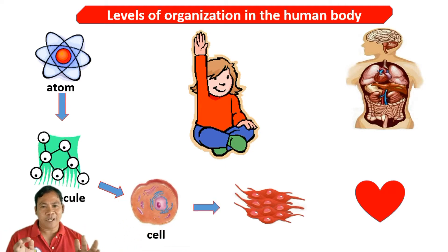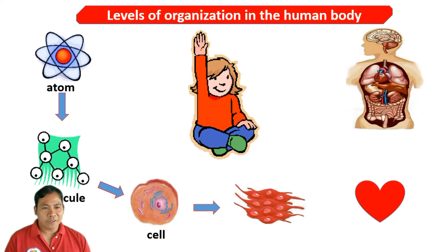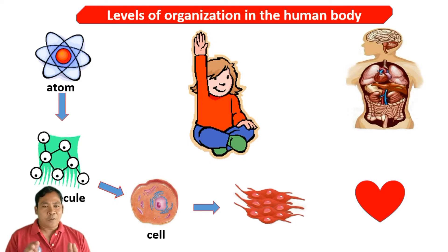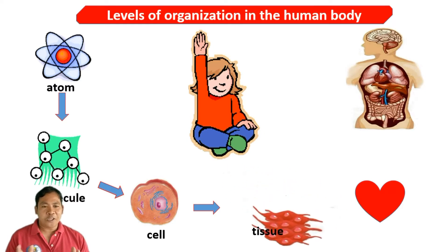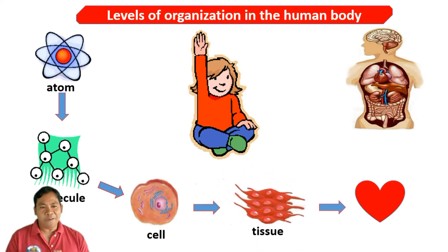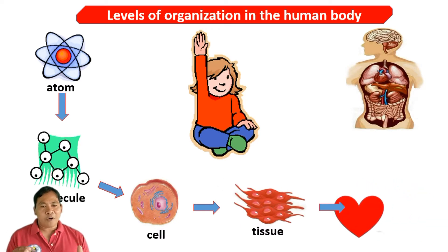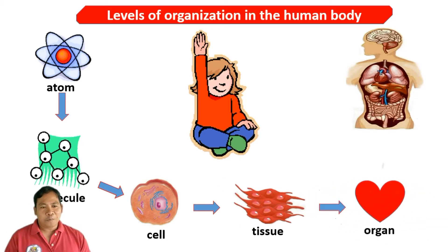Billions of cells, all of them specializing in certain functions, make up the body. A group of similar cells with similar functions is called a tissue. Tissues with a specific function form an organ. Organs are grouped together into systems.